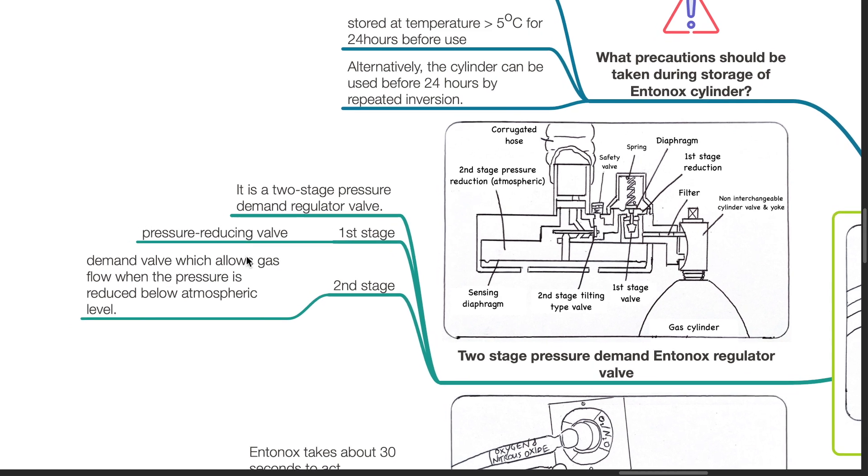Two-stage pressure-demand Entonox regulator valve: This is a two-stage pressure-demand regulator valve. The first stage involves a pressure-reducing valve. Second stage, a demand valve which allows gas flow when the pressure is reduced below atmospheric level.